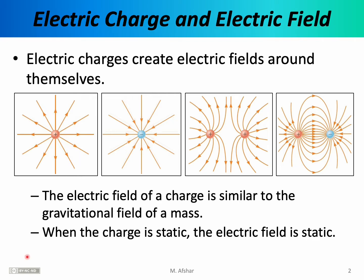Matter consists of atoms, and atoms consist of neutrons, protons, and electrons. Of those three basic particles, neutrons have no electric charge — we say they are electrically neutral — while protons have positive charge and electrons have negative charge. In our discussions of electromagnetic waves, we'll be primarily interested in charged particles like protons and electrons.